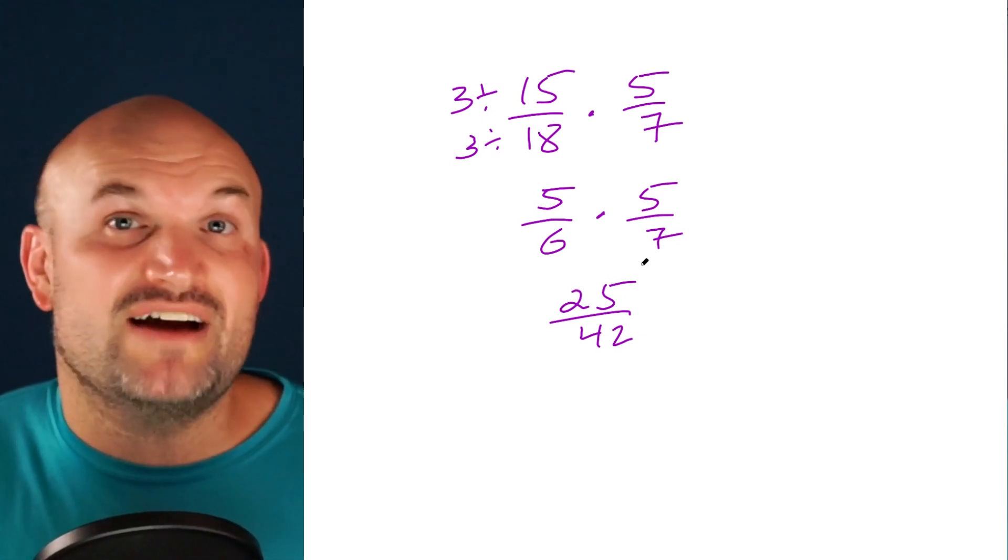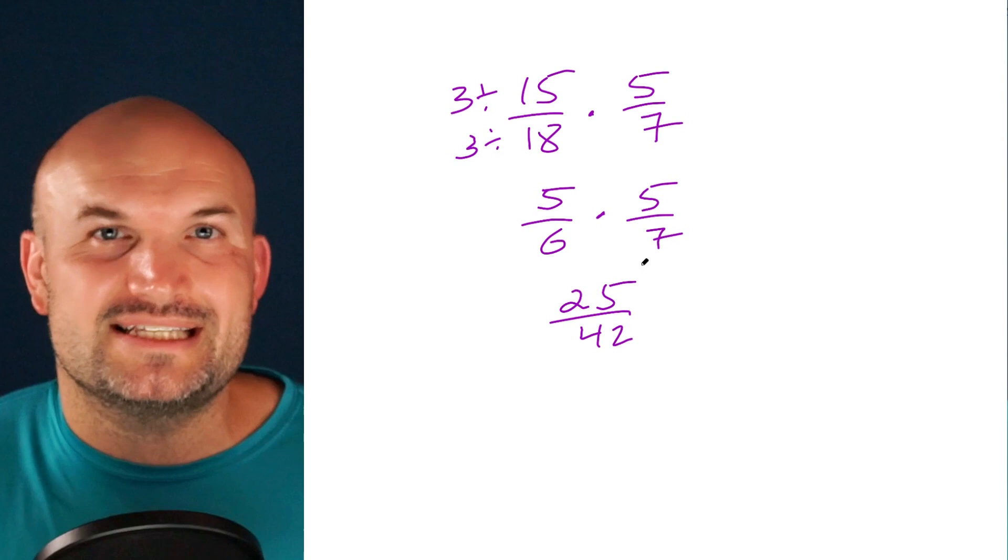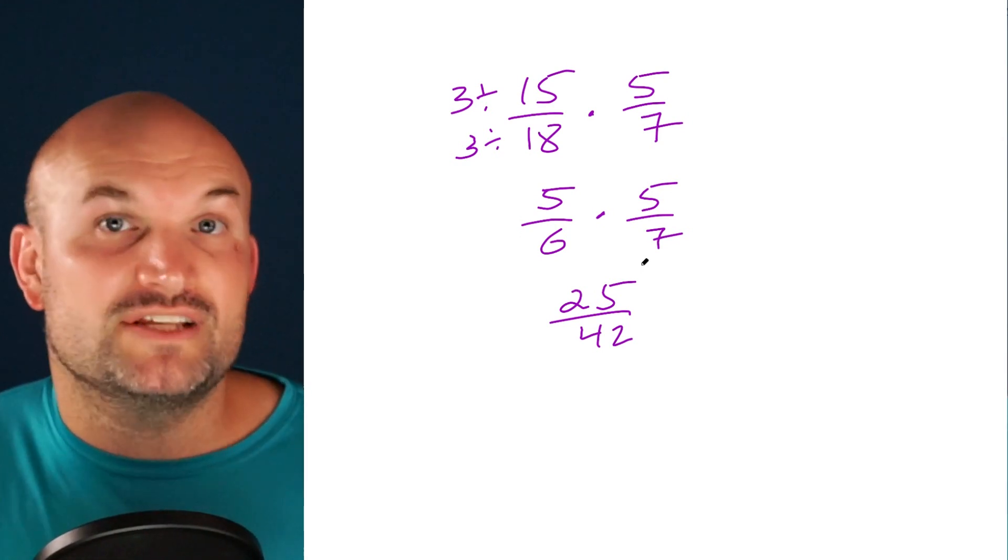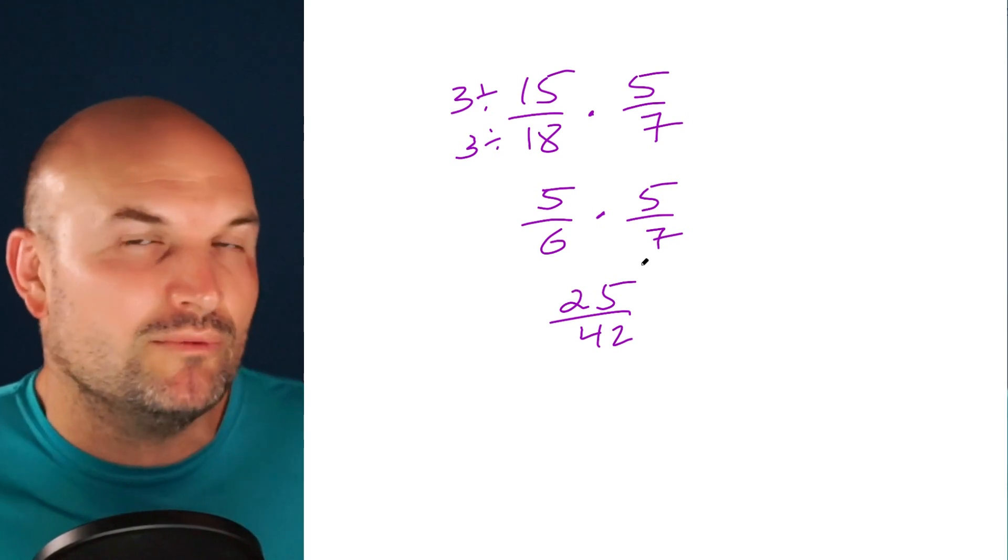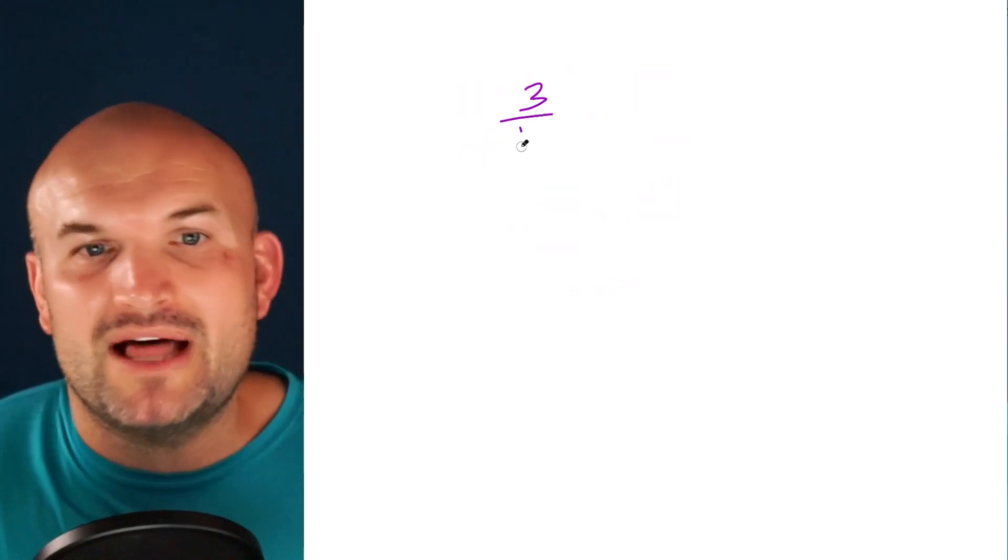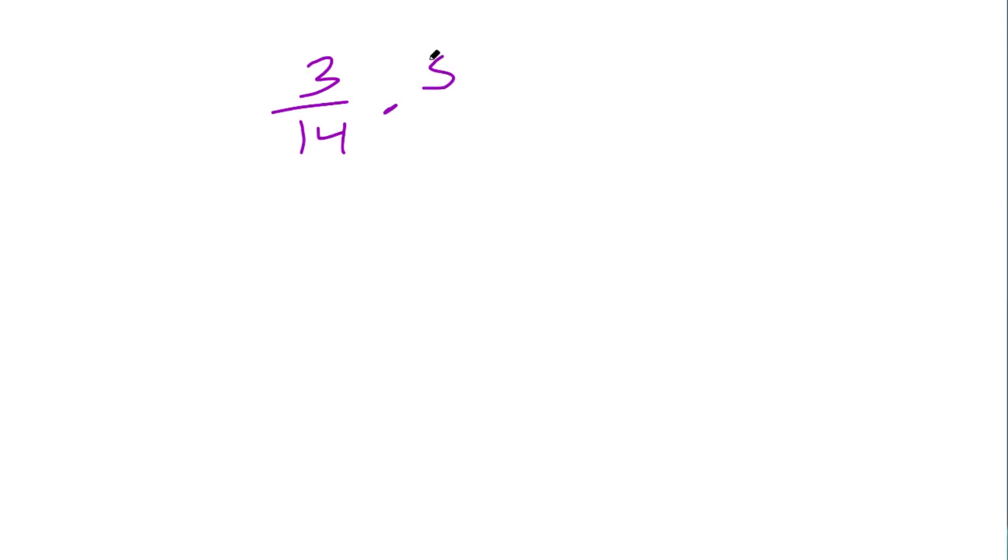Now a lot of times students will get stuck with simplifying fractions, especially if you can't simplify the numerator and the denominator of the same fraction, but there's still opportunities for us to simplify fraction, especially when we're dealing with multiplication of two fractions. In this example, I have 3/14 times 5/9. Now the fraction 3/14 and 5/9 cannot be simplified. However, the 3 and the 9 in different fractions can be simplified, and I can do that because my operation is multiplication and the values are in the numerator and the denominator.